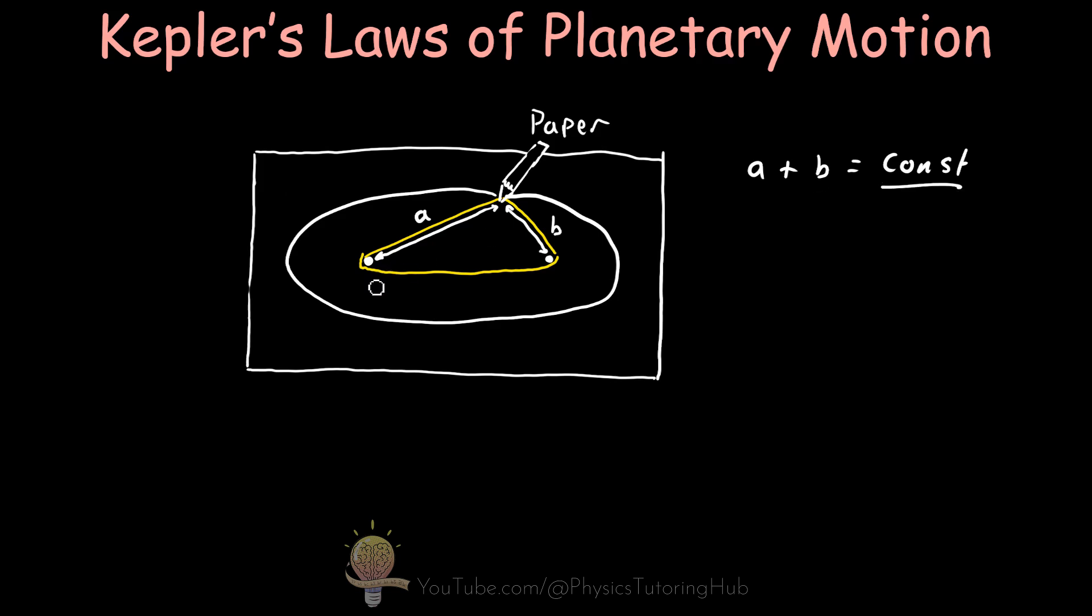Now these pins here represent our focal points, so we can call this pin here focal point 1 and this focal point 2. And the tip of our pencil here will represent a planet orbiting a star around one of these focal points. So it could either be the first focal point or the second focal point.